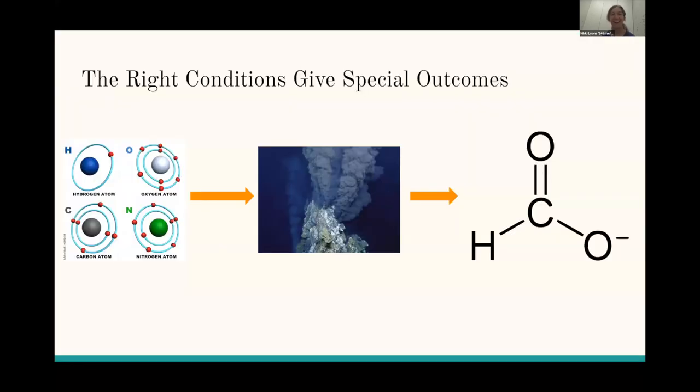Basically, I'm looking at the hydrothermal vent environment and the microbes that live on them. And specifically, I'm looking at formate dehydrogenase, which oxidizes formate into carbon dioxide. And it's a really important aspect of hydrothermal vent environments because it's a lot more abundant than it would be in a lot of other environments.